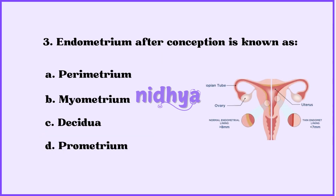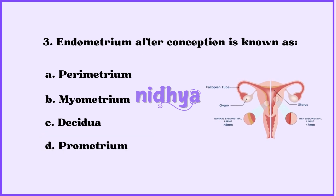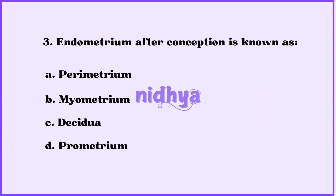Third question: Endometrium after conception is known as — perimetrium, myometrium, decidua, or prometrium? The answer is decidua.